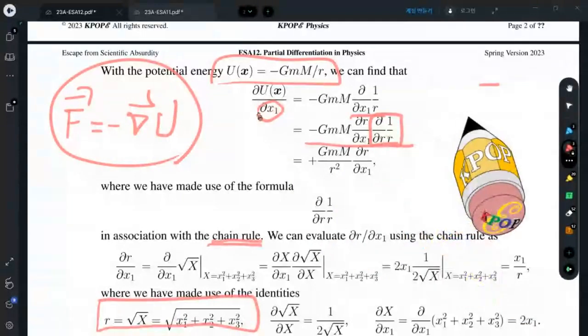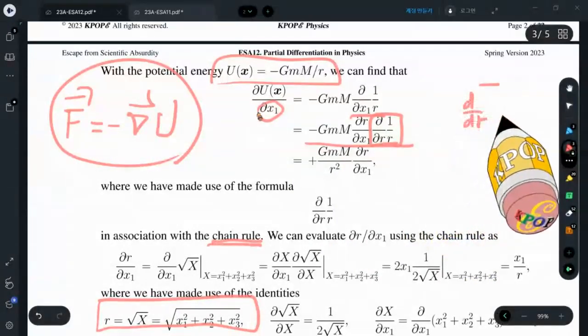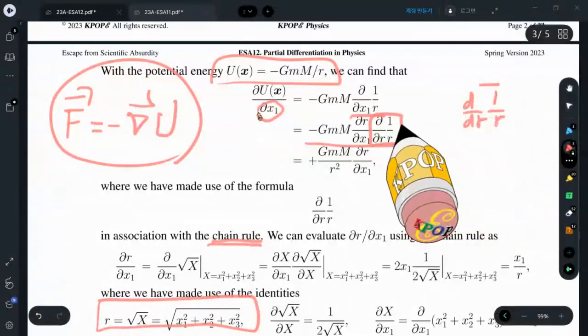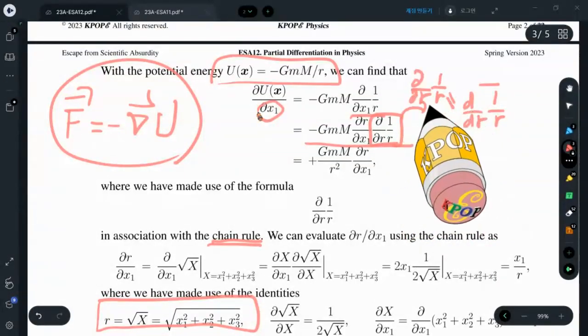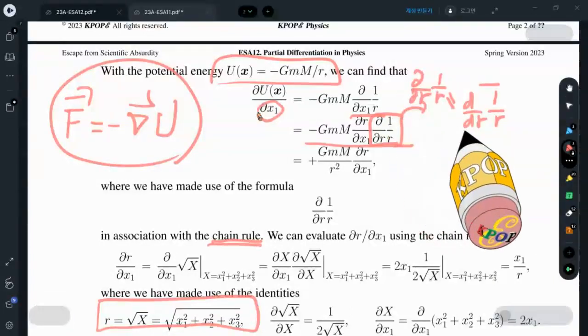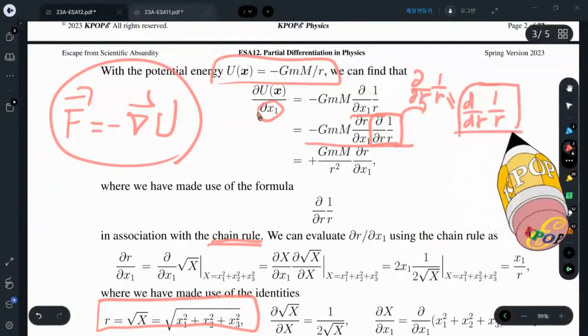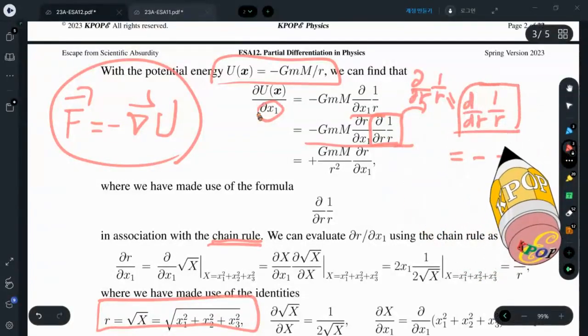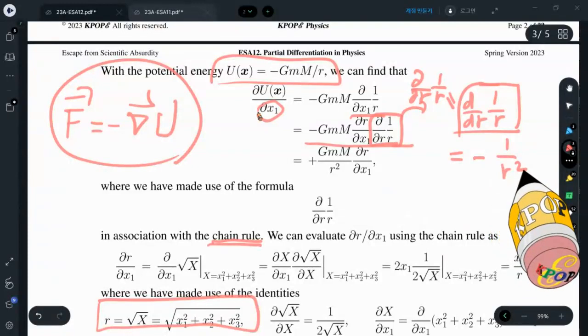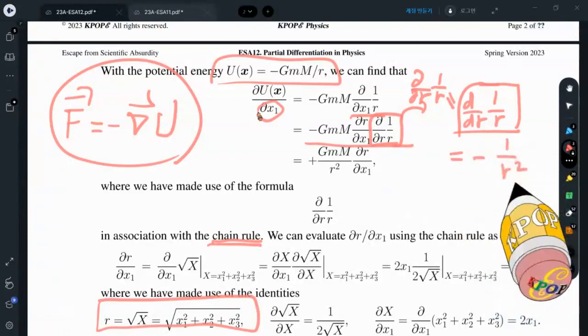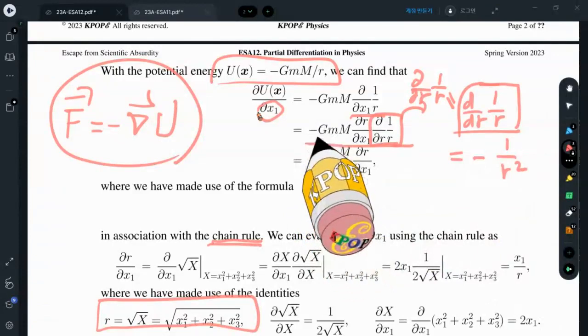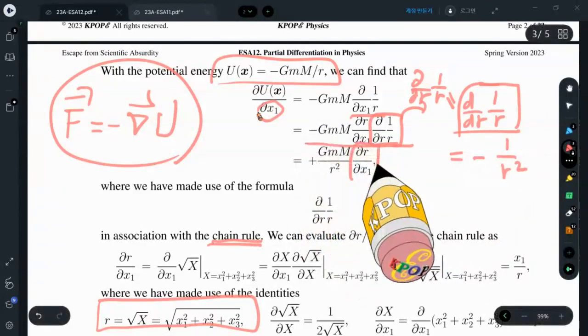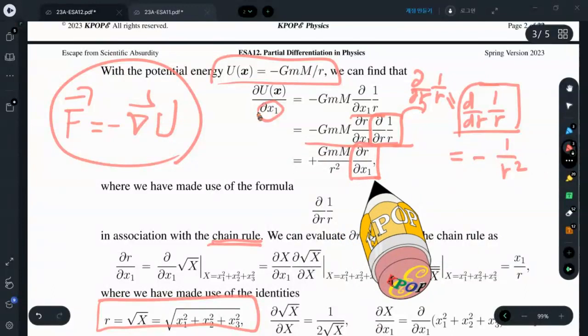We know this is a single variable case. If you arrive at a single variable derivative, you can replace with this usual notation that is 1 over r squared. Because of 1 over r squared, it becomes GmM over r squared and we need to evaluate this.